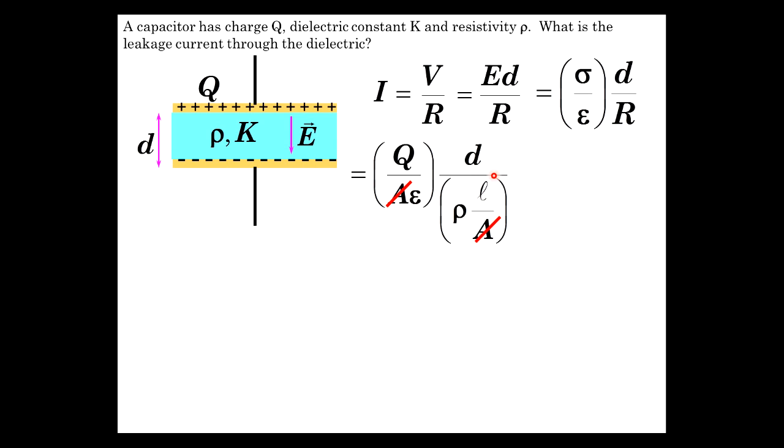But what's this L? Well, L is the length of the resistive material that you're traveling through. And that actually is d, the same thing. So they divide out, and we have Q over epsilon rho.